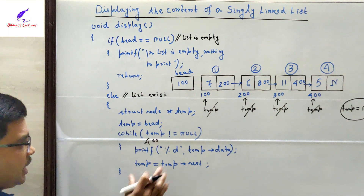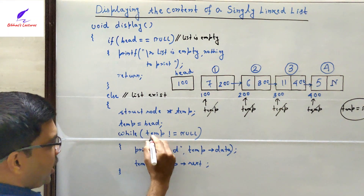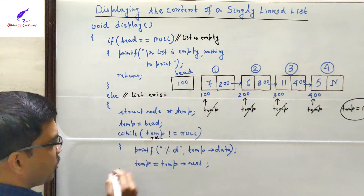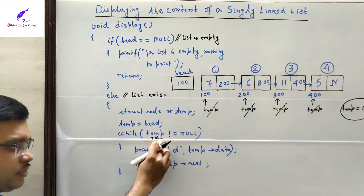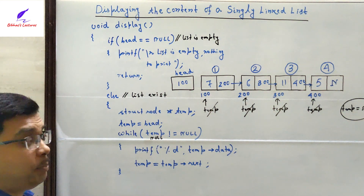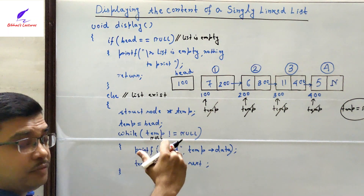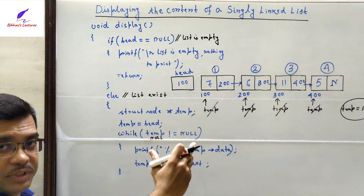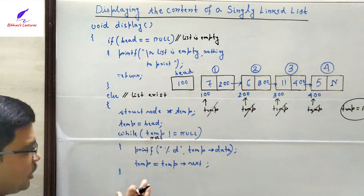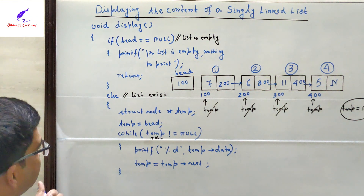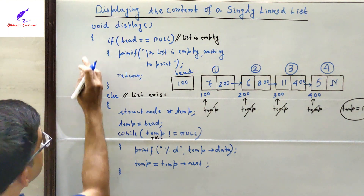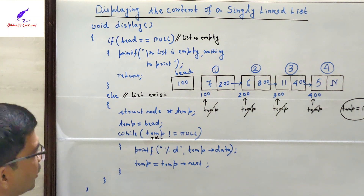The condition checks if temp != null, but temp is now null, so the condition becomes false and we exit the loop. This means we have printed the data parts of all nodes in the linked list — the entire list has been traversed. That is the end of the display function.